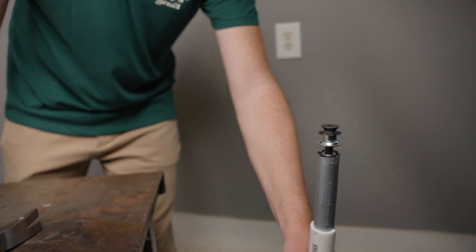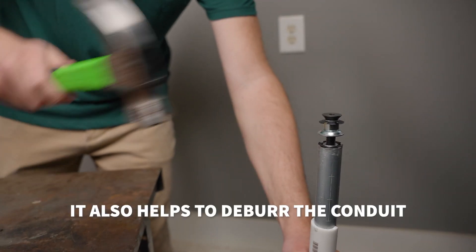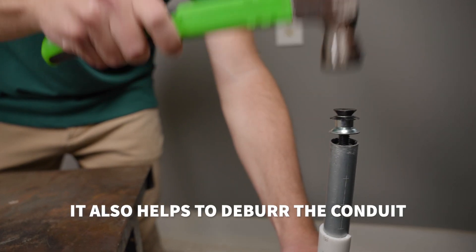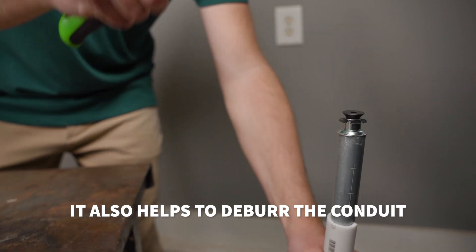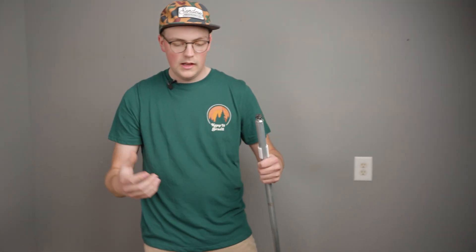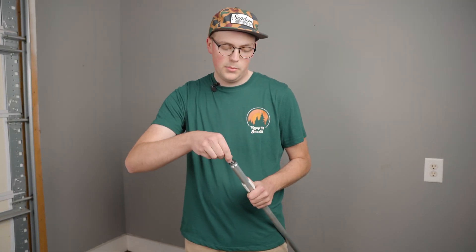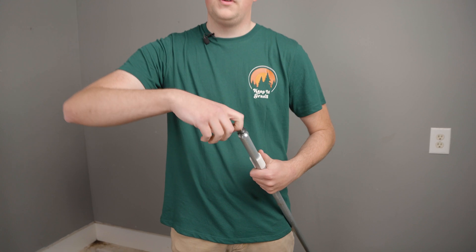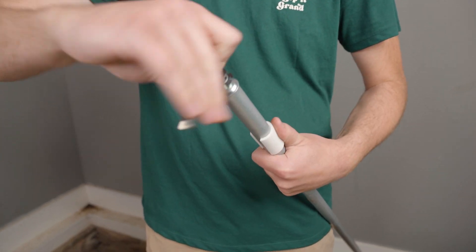Once you get it started, you can take the outer sleeve off and you just keep hitting until the lip catches on the end of the pipe and then all you got to do is take out the bolt and the insert. If it's pretty tight, you might have to use a wrench or a tool.